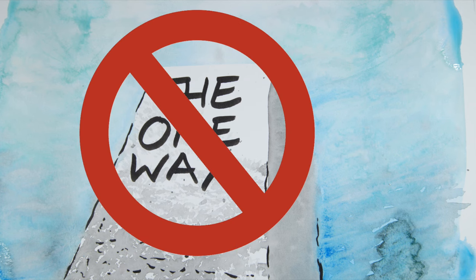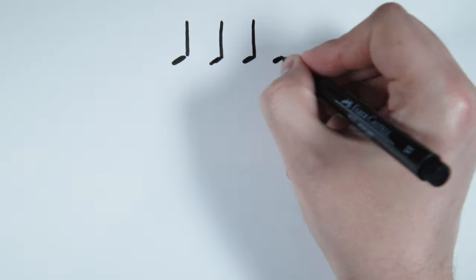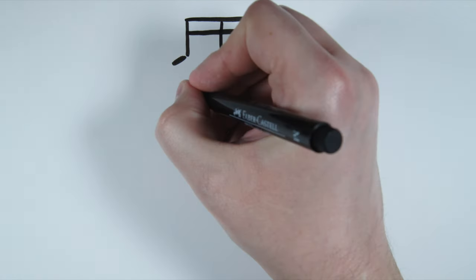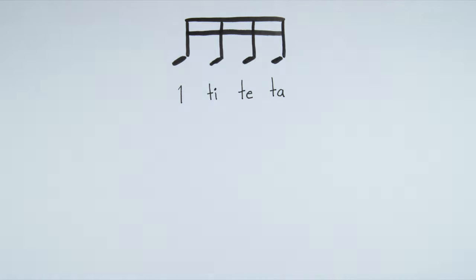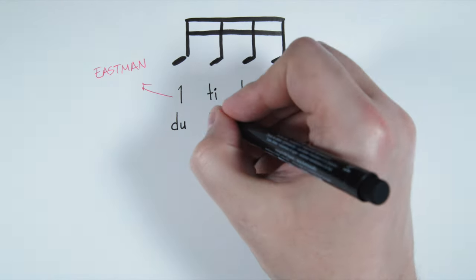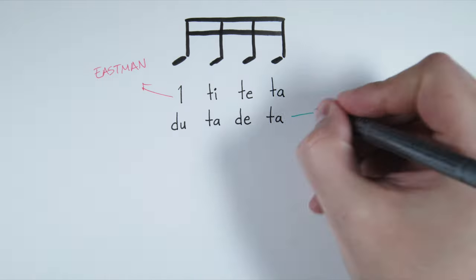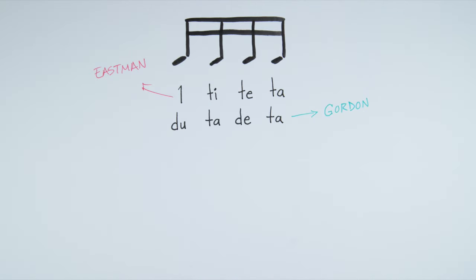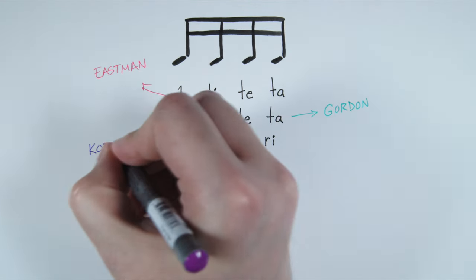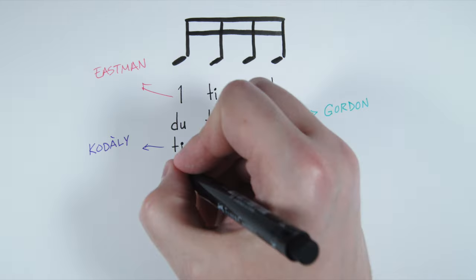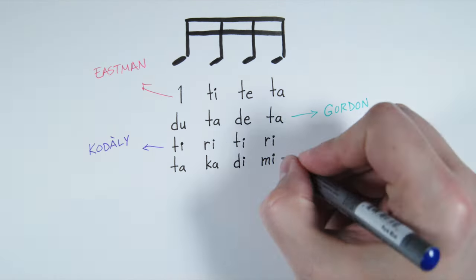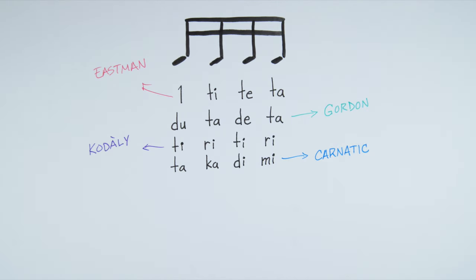However, there are many different ways of counting music. Take these 16th notes for example. You could count them as 1-ti-te-ta using the Eastman system, or du-ta-de-ta using the Gordon system, or ti-ri-ti-ri using the Kodály system, or takadimi using the Carnatic South Indian system, or 1-e-&-a using the standard system.